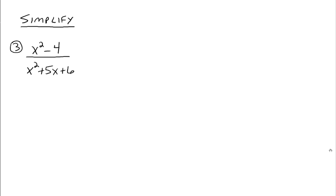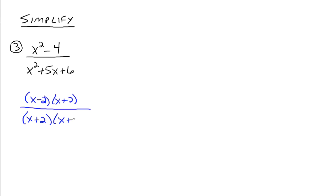Let's try another one. Factor the numerator: x squared minus 4 is the difference of two squares, so we rewrite that as (x minus 2)(x plus 2). For the denominator, x squared plus 5x plus 6 is a trinomial with leading coefficient 1. Factors of 6 that add to 5 are 2 and 3, so it factors as (x plus 2)(x plus 3). We look for common factors: x plus 2 appears in both, so those divide out to 1, leaving x minus 2 divided by x plus 3.